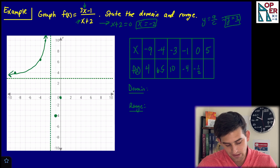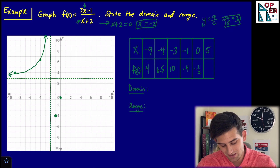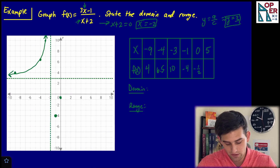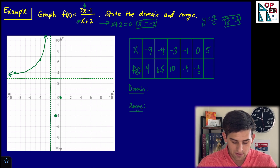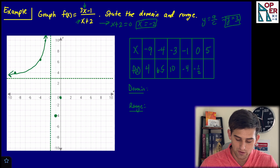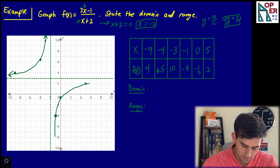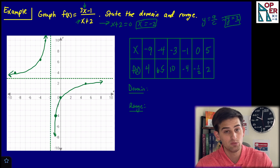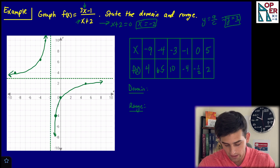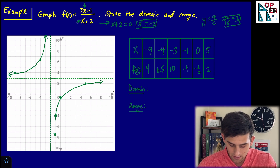And lastly, for x equals five: three times five is 15, minus one is 14; five plus two is seven; 14 over seven is two. So the point is five, two. Now we graph all of these points, and we have our two branches of the hyperbola on our graph.